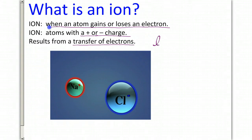you should end up with someone losing with a positive charge and another atom that gains and ends up with a negative charge, both of which are known as ions.